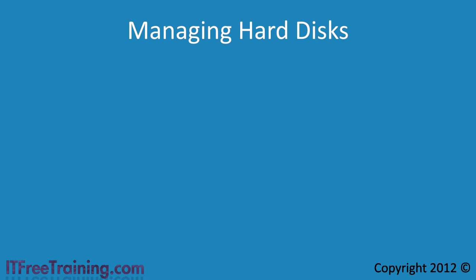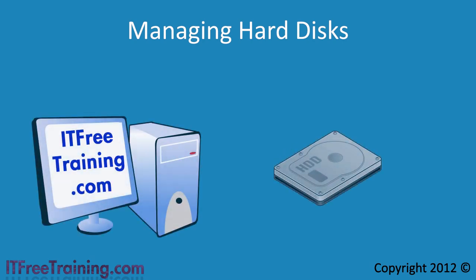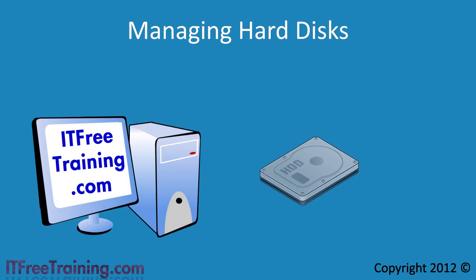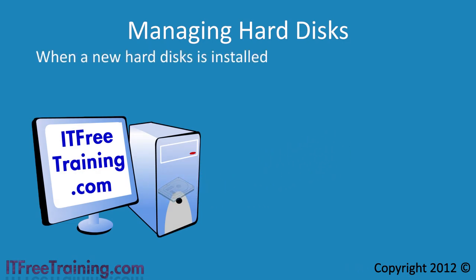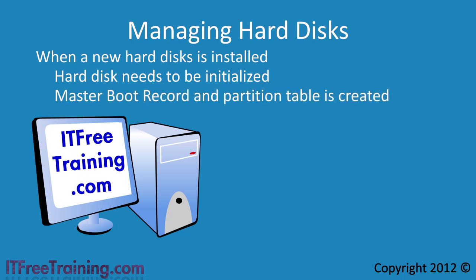Let's start from the beginning and look at what happens when you put a brand new hard disk into Windows 7. Once a new hard disk has been installed in a Windows 7 computer it must first be initialized. The process of initializing the hard disk creates a boot record and partition table. This information tells the BIOS the layout of the hard disk and where to find software to boot the operating system.